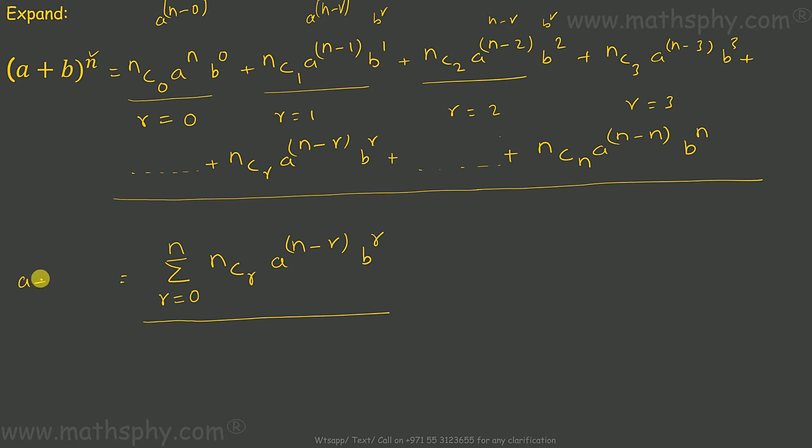So, a plus b, raised to n, is equal to summation, n c r, a raised to n minus r, b raised to r, where r starts with 0, goes till n. All right?